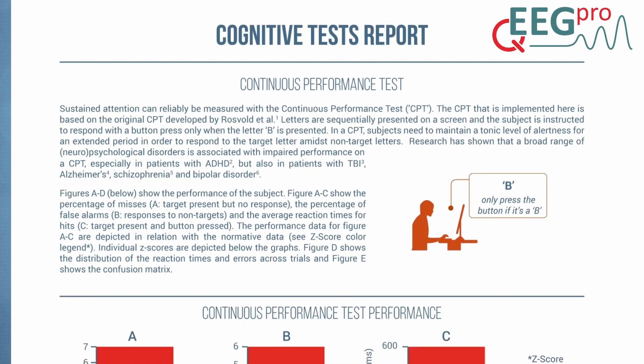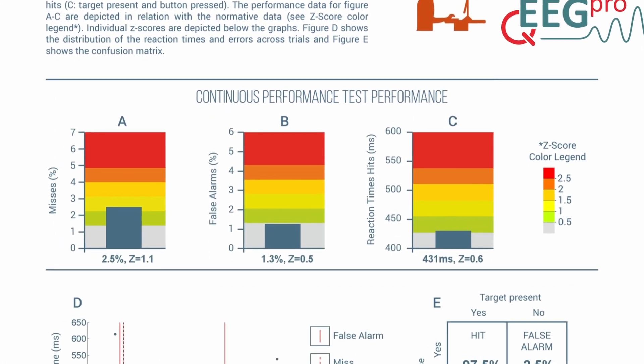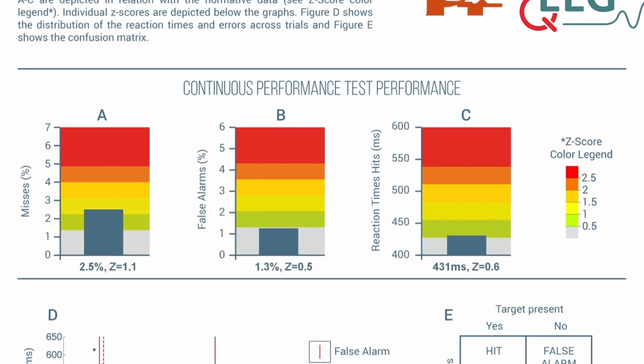Here is an example of what the results page of the CPT looks like. The top of the page contains general information about the CPT and how to interpret the graphs below. Let's look at the first row of bar graphs. From left to right, these contain the percentage of misses or when the letter B was presented but no button press was given, the percentage of false alarms or button presses to other letters, and the average reaction time for hits or when a B was presented and a button was pressed.